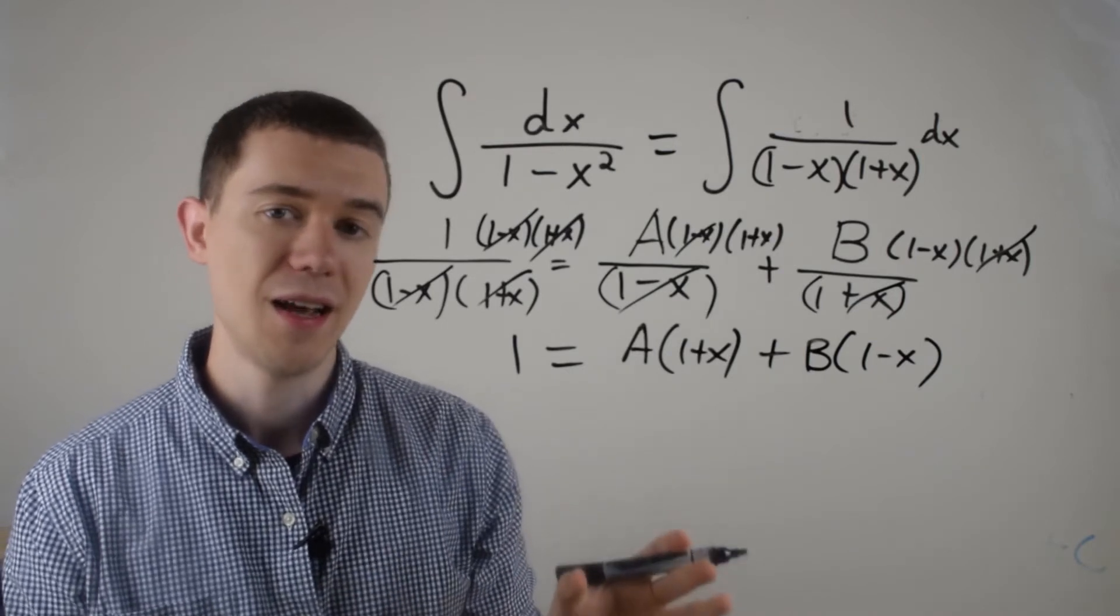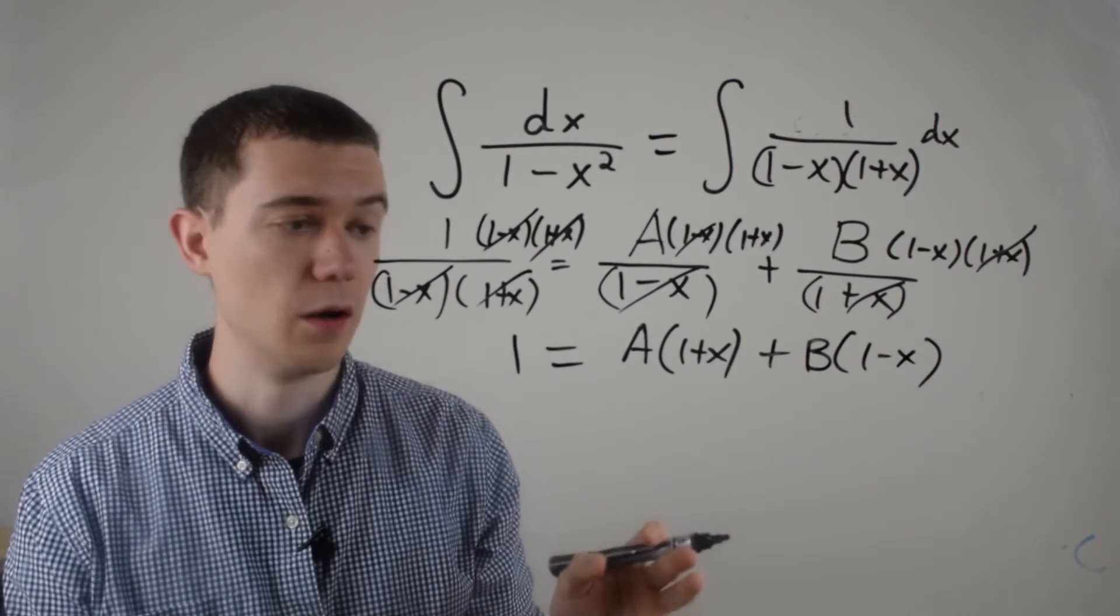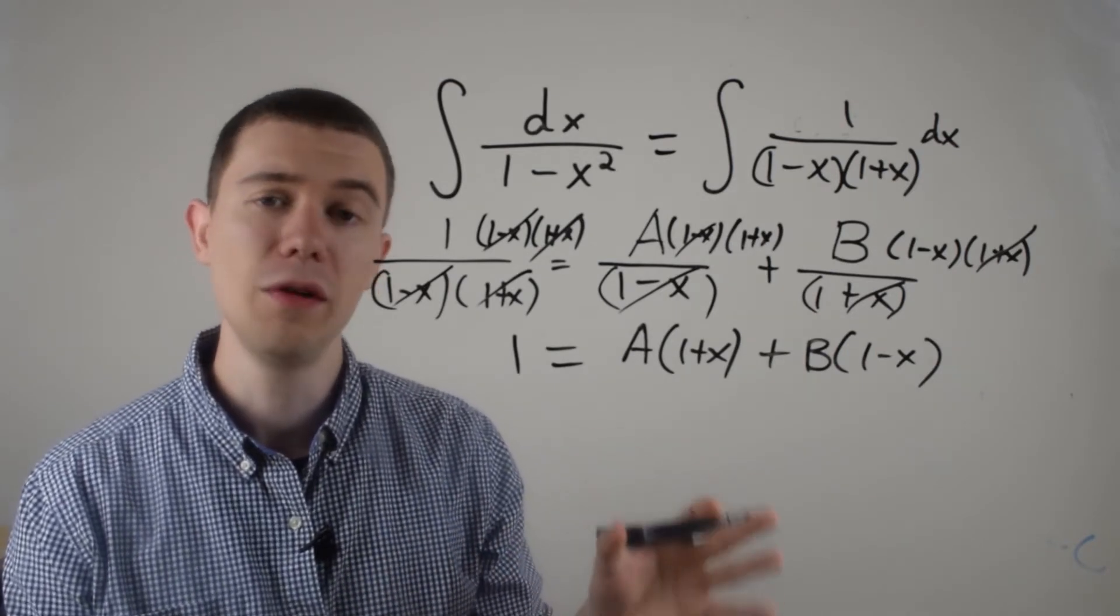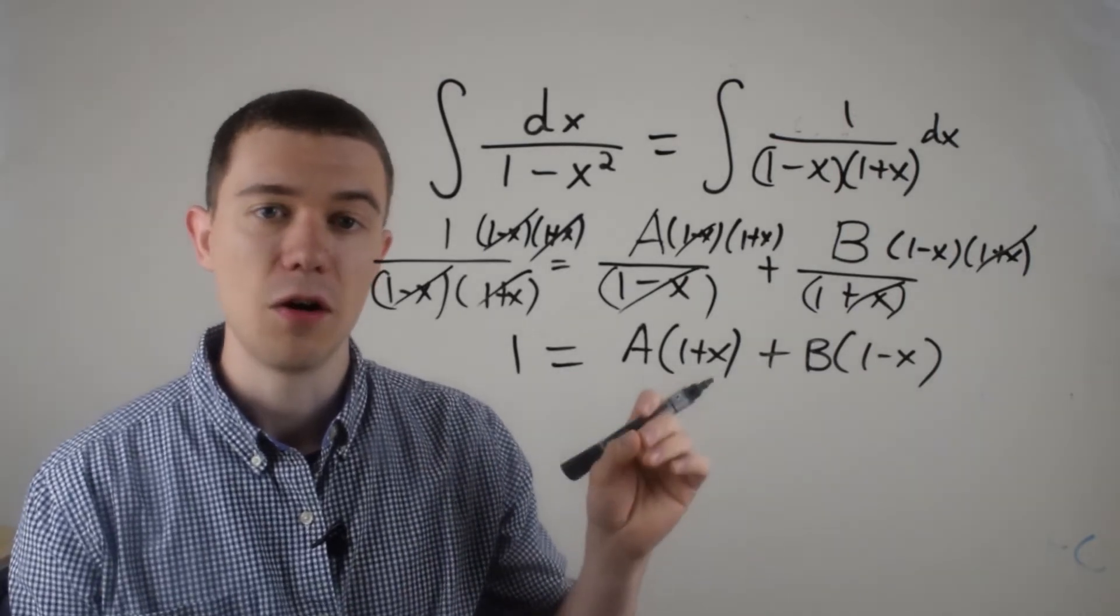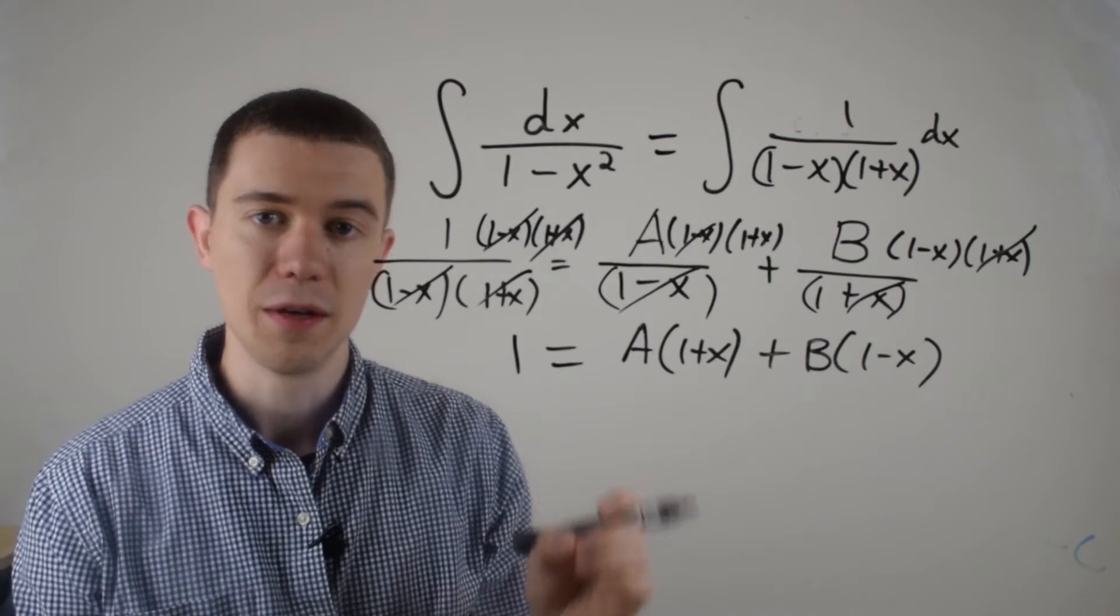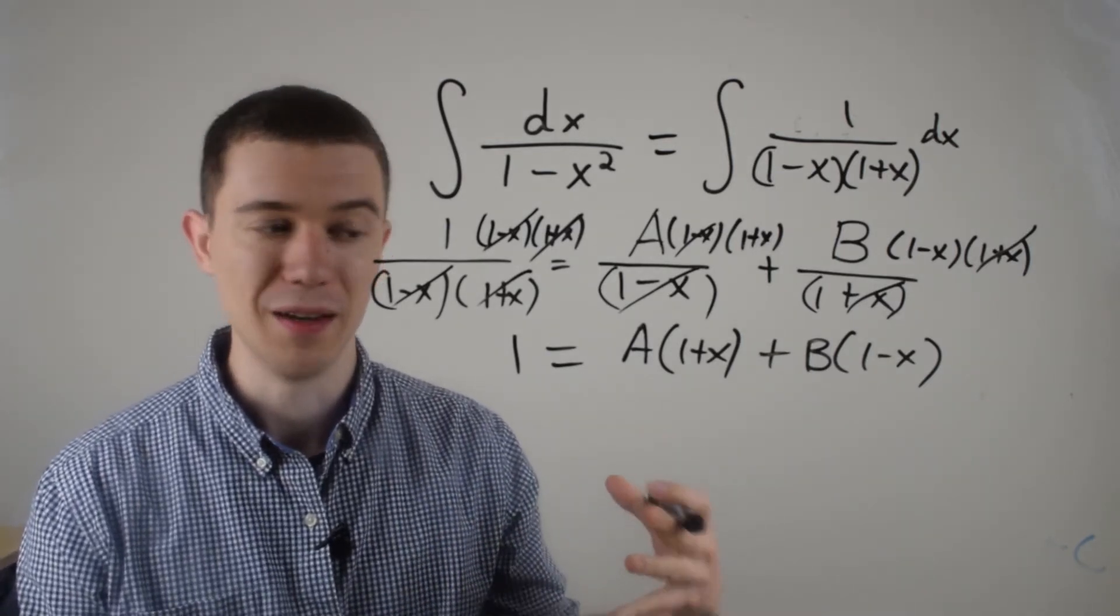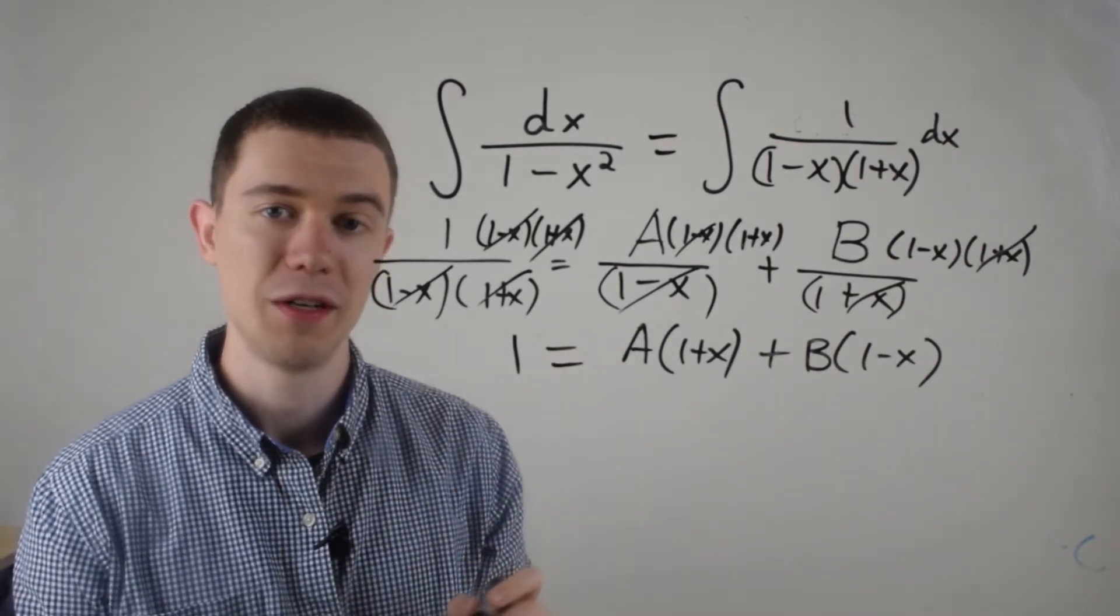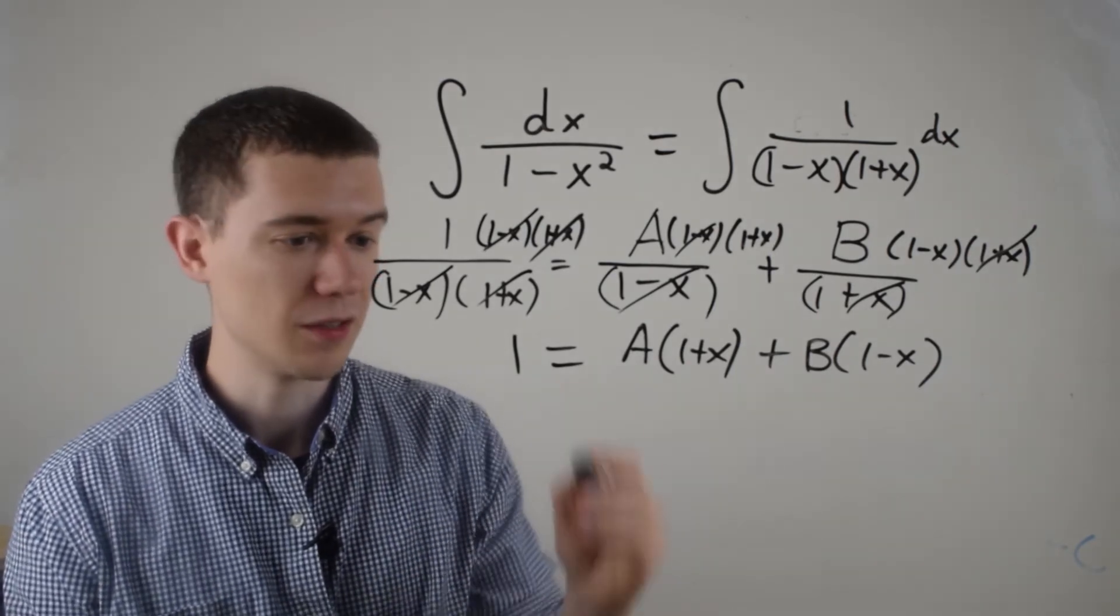Now, to find A and B here, there's a couple of things you could do. Some people simply substitute the value, and that's totally valid in this instance. The reason I'm not going to do it is because there are certain instances where the substitution will lead you astray, sometimes if you're multiplying by 0, for example. The way I'm going to solve this particular problem is to do what's called matching coefficients. Let me show you what that looks like.